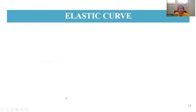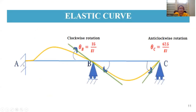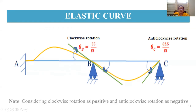Using the computed rotations, the elastic curve can be drawn. At the fixed support A, theta_a = 0 so there is no rotation. At B, the positive value gives a clockwise rotation. At C, the negative value gives an anticlockwise rotation. The sign convention considers clockwise rotation as positive and anticlockwise as negative.